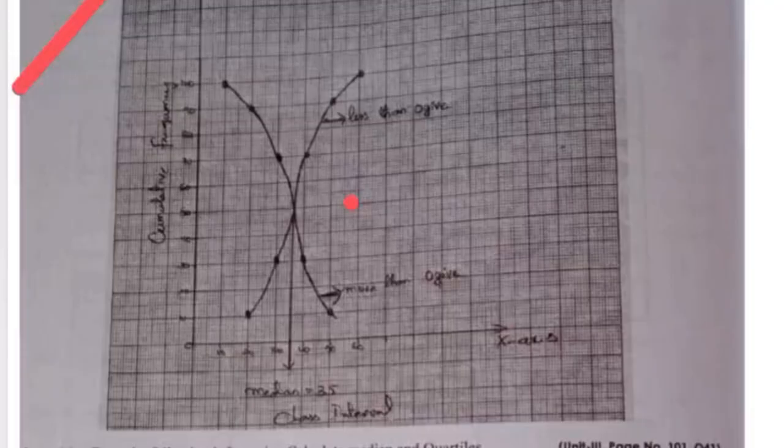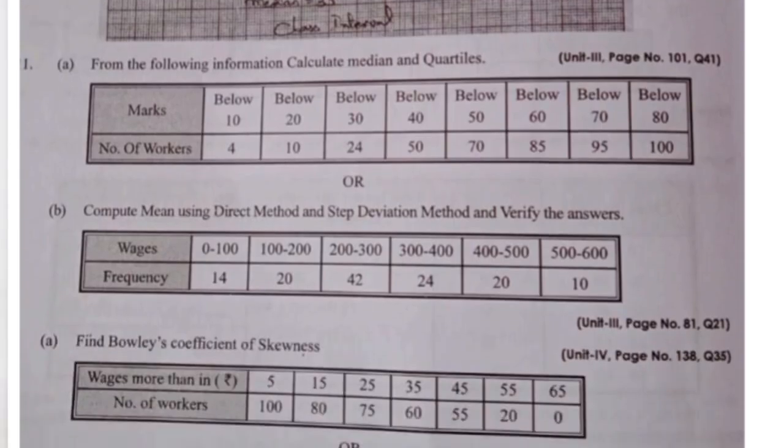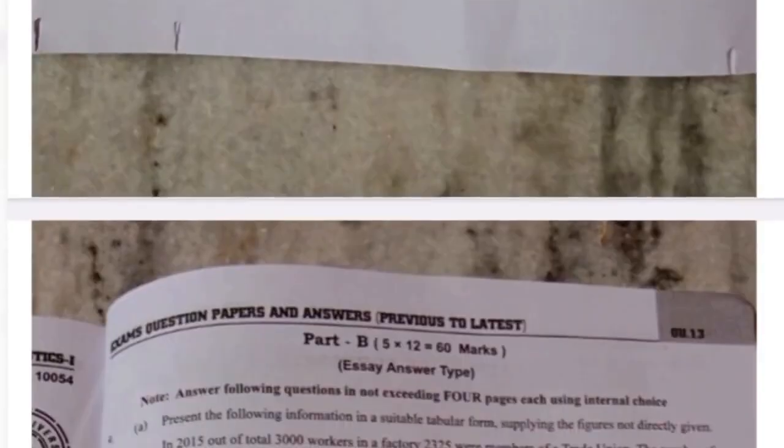And you need to do whatever they were asked like ogive curves or pie diagram, you need to do like that. Here, okay, and from third unit they were asked about the medians and quartiles and step deviation method. And from fourth unit, Bowley's coefficient of skewness. So like this type of question papers, if you practice this type of question papers, then you can easily get understand, okay?